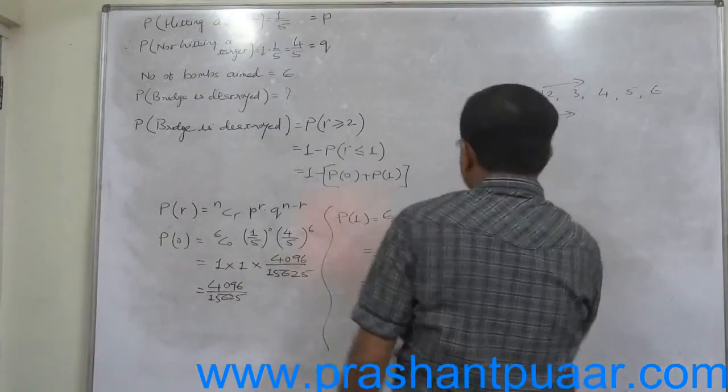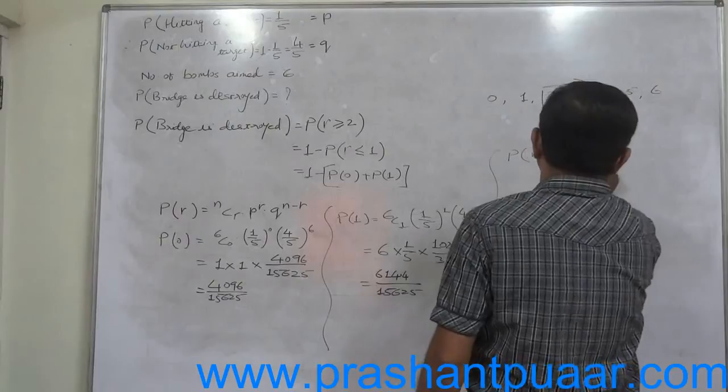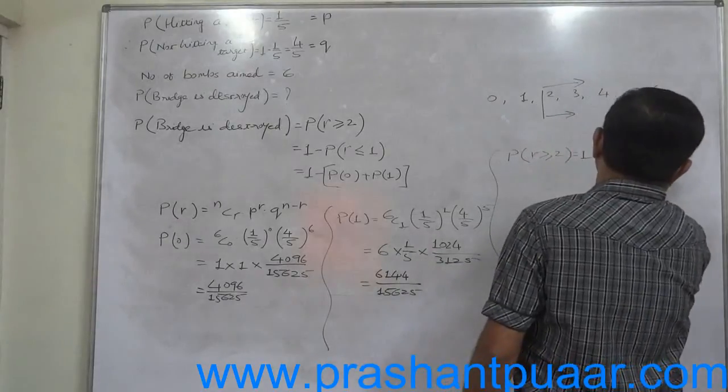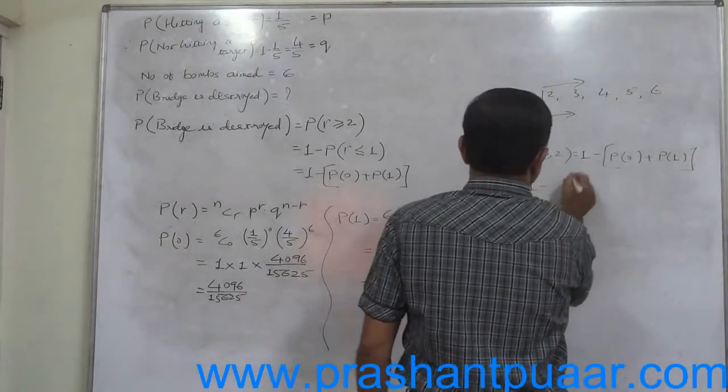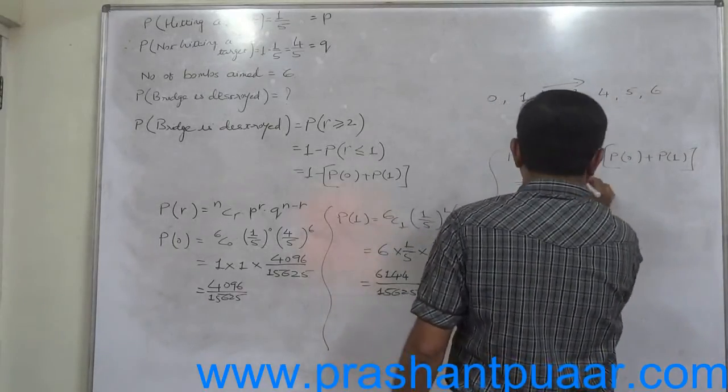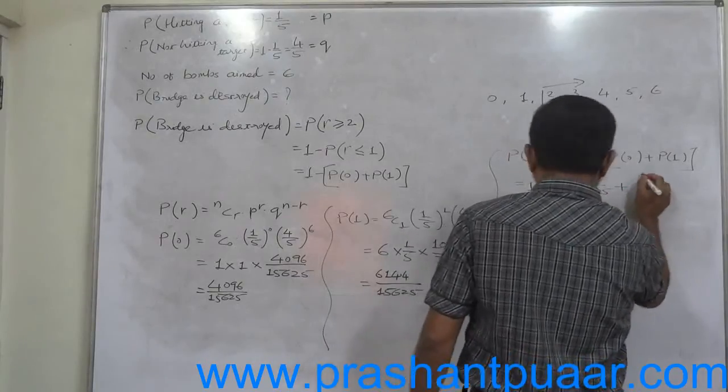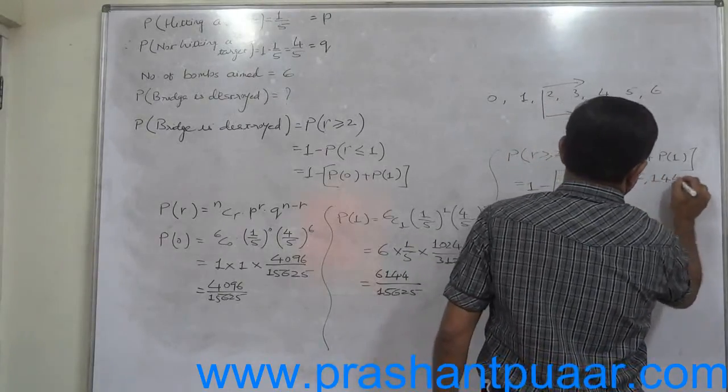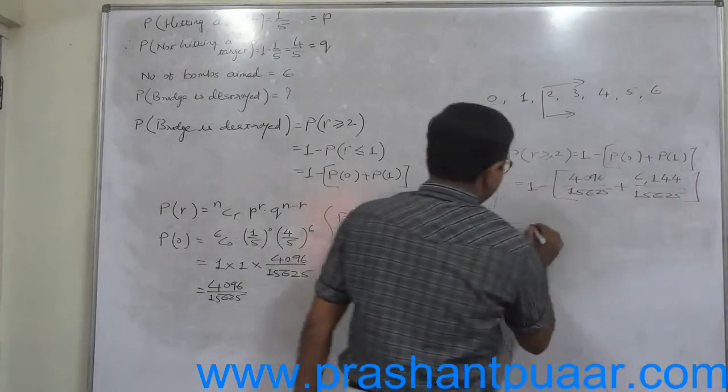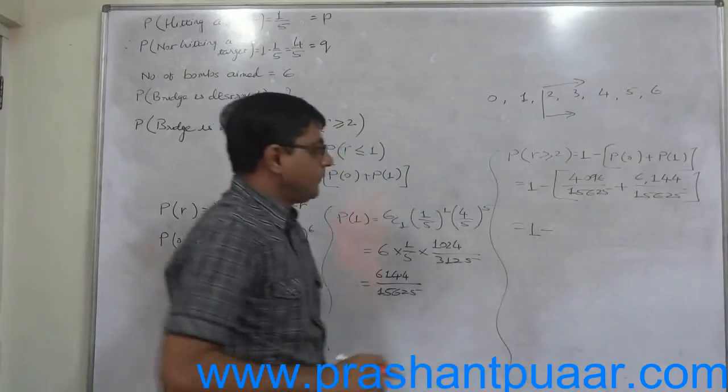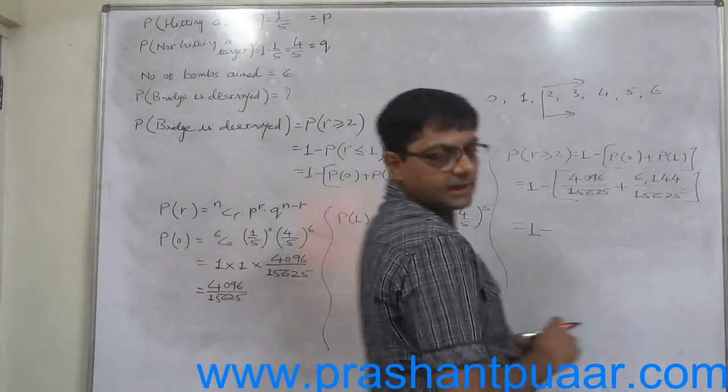Now we want the final answer. That means 1 minus 4096 plus 6144, which is 10240, divided by 15625.